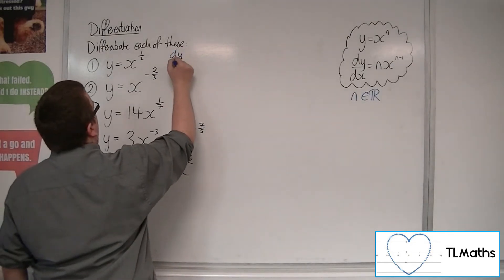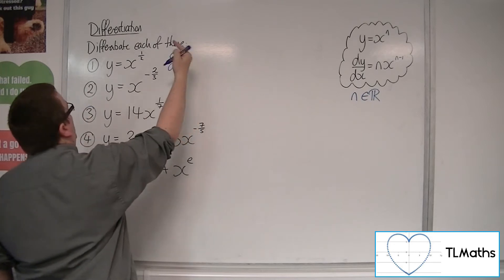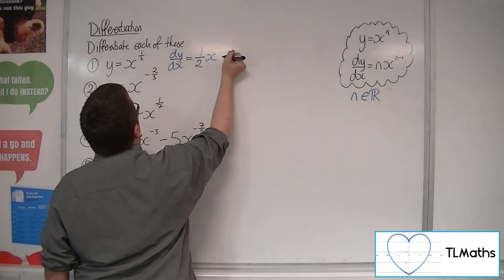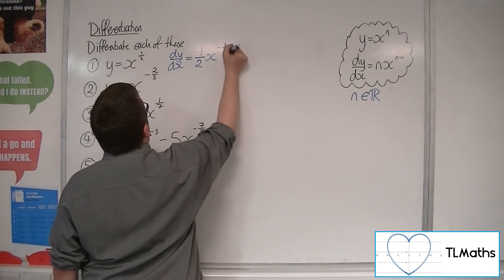So here, number 1, dy by dx. The half comes down to the front, and we subtract 1 from the power. So 1 half take away 1 is minus 1 half.